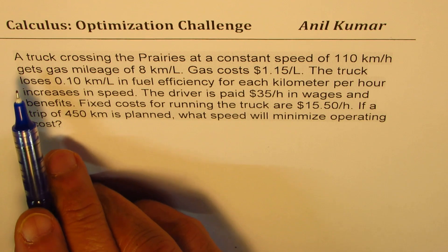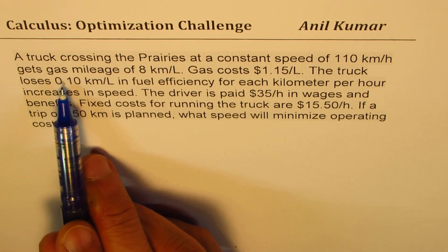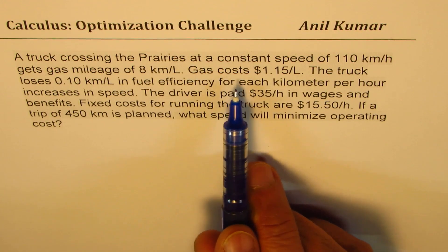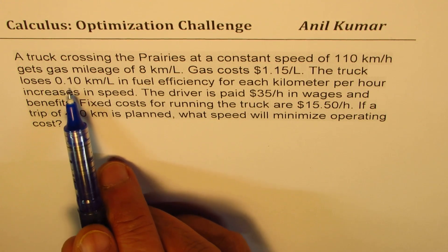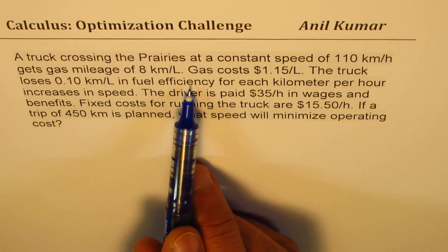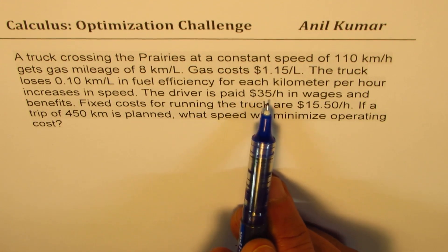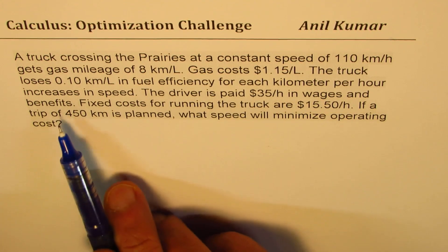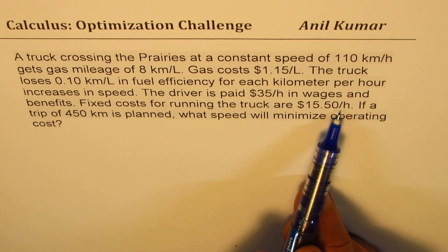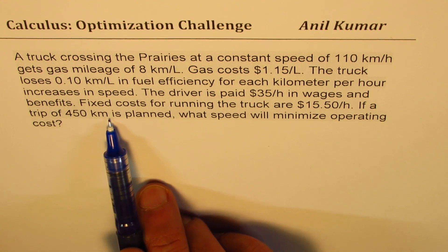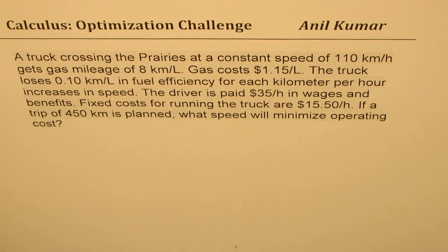The question here is: a truck crossing the prairies at a constant speed of 110 kilometers per hour gets gas mileage of 8 kilometers per liter. Gas costs $1.15 per liter. The truck loses 0.10 kilometers per liter in fuel efficiency for each kilometer per hour increase in speed. The driver is paid $35 per hour in wages and benefits. Fixed costs for running the truck are $1.1550 per hour. If a trip of 450 kilometers is planned, what speed will minimize operating cost?